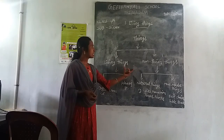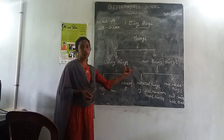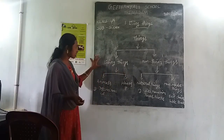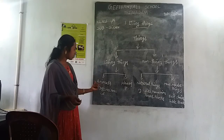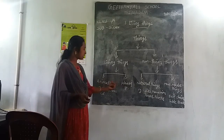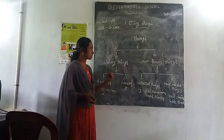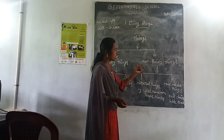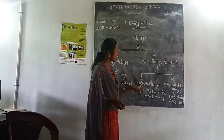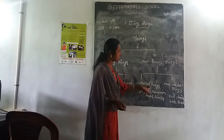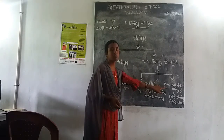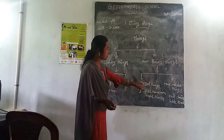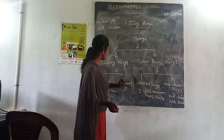Further, each one is divided into two types. Living things are divided into two types: animals and plants. Non-living things are divided into two types: natural things and man-made things.